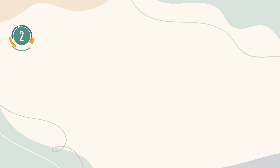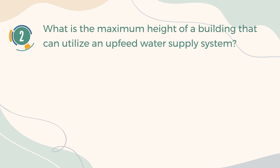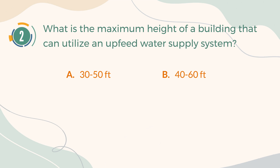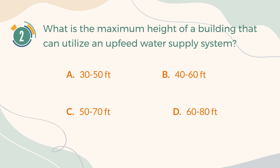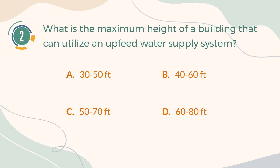Number 2. What is the maximum height of a building that can utilize an upfeed water supply system? A. 30 to 50 feet. B. 40 to 60 feet. C. 50 to 70 feet. D. 60 to 80 feet. The correct answer is B. 40 to 60 feet.